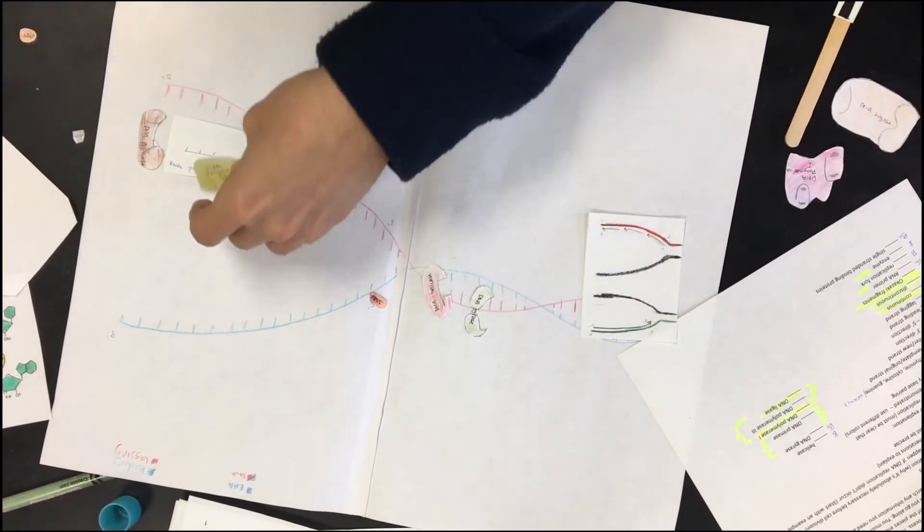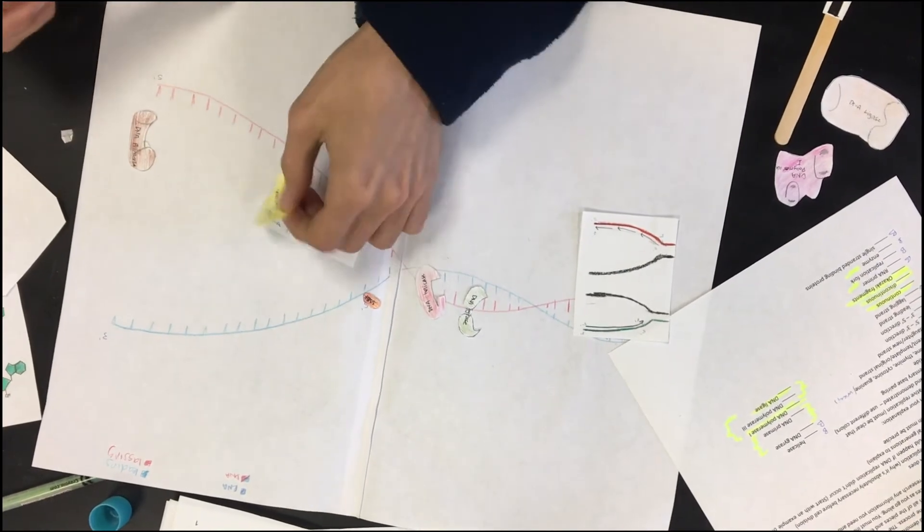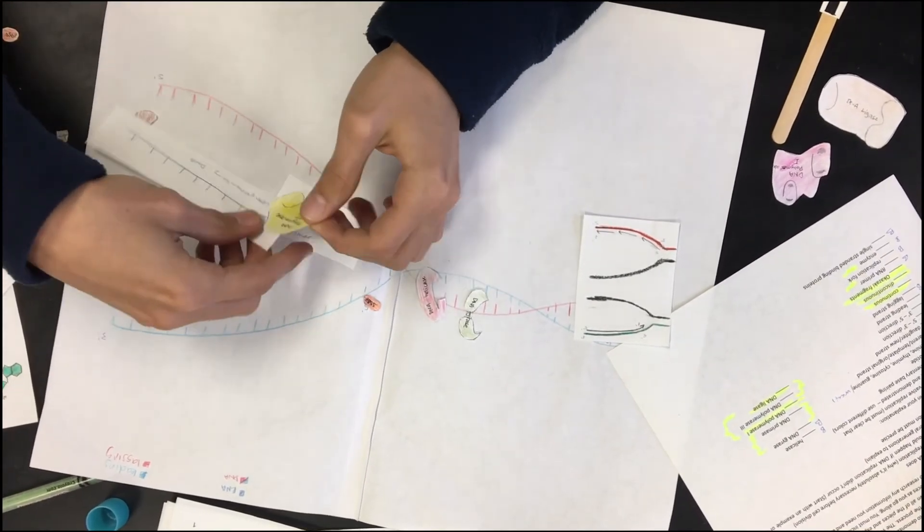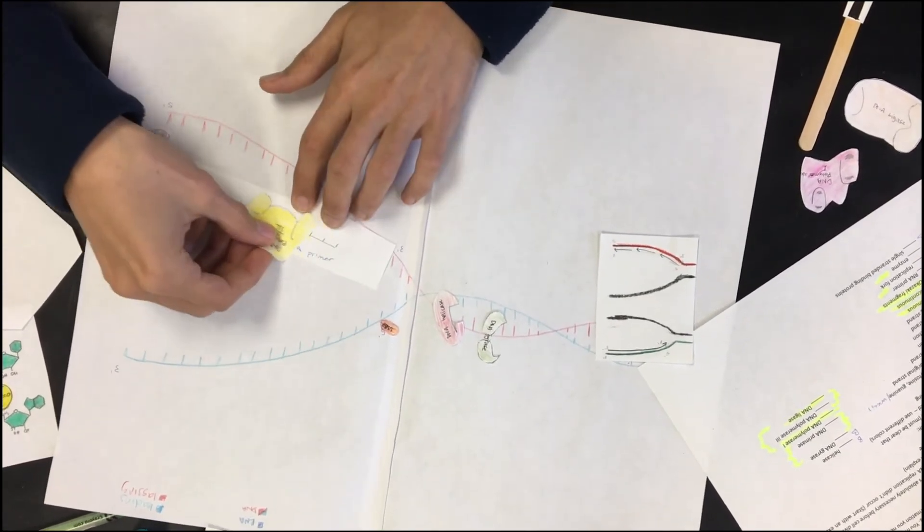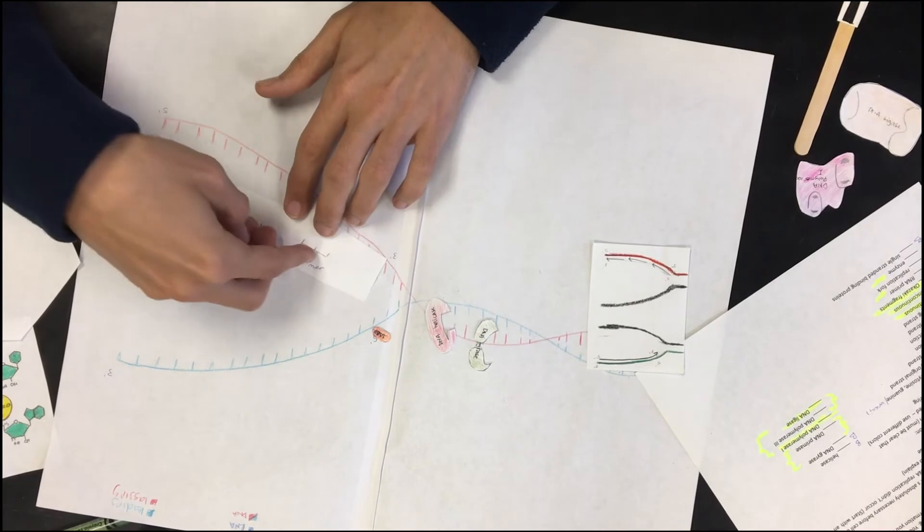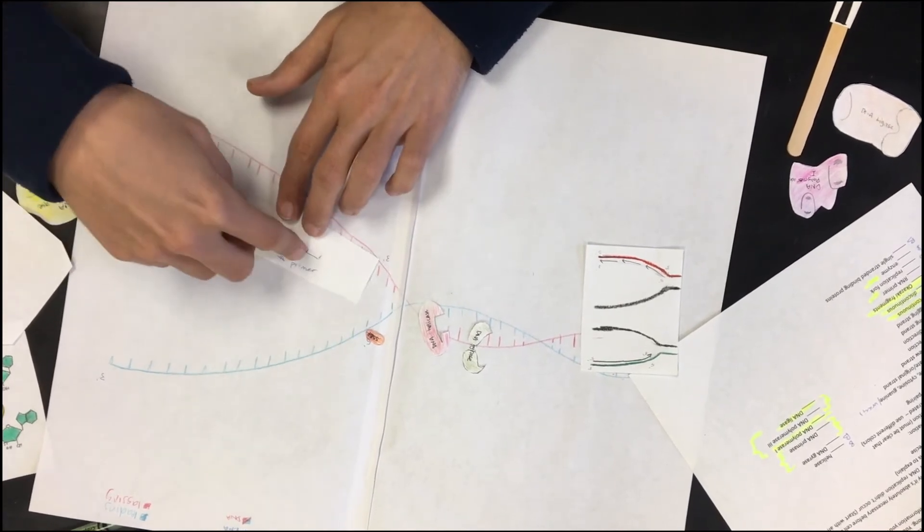So, the DNA polymerase comes in and it'll add the nucleotides. It has to do it in a 5' to 3' direction, which is this way. So, it'll add the nucleotides and now you have the complementary DNA and the RNA primer.